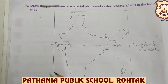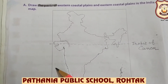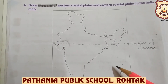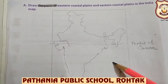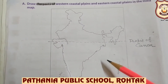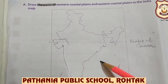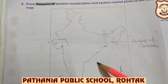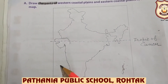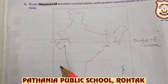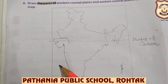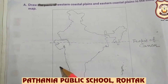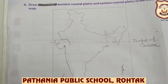The southern part of India is surrounded by the Arabian Sea in the west, the Indian Ocean in the south, and the Bay of Bengal in the east. So on the east there are Eastern Coastal Plains, and on the west side there are Western Coastal Plains. Both these plains meet at the southernmost tip of the Indian peninsula at Kanyakumari.